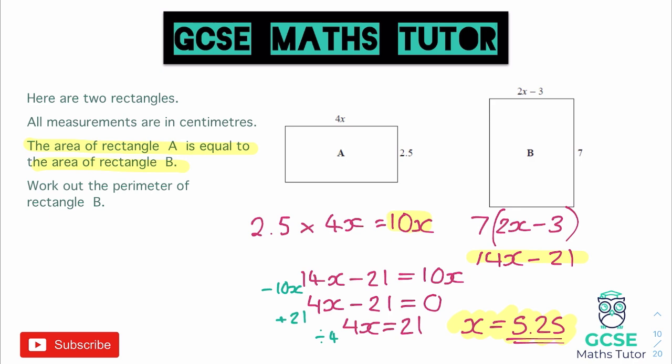So now how are we going to use this X value? So the question said, work out the perimeter of rectangle B. So for rectangle B, we need to go about working out the perimeter. So to do that, we just need to think about any of the side lengths that we already have. Now we already know the height of it on the right hand side is 7. And opposite that is equal, so this is 7 as well.